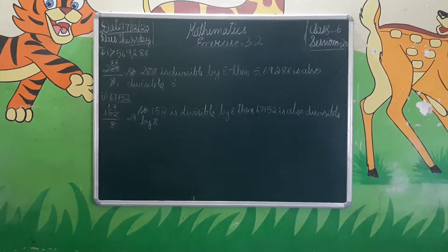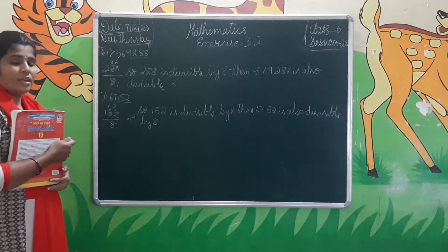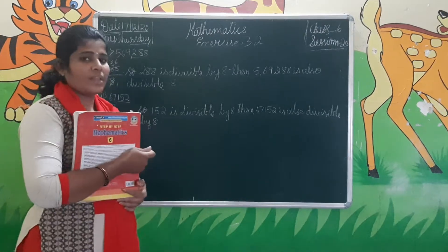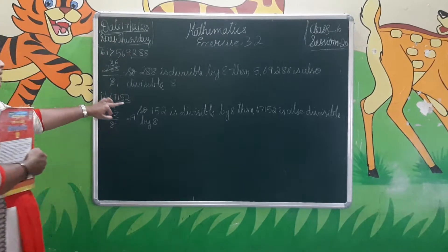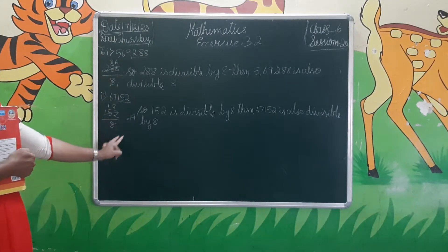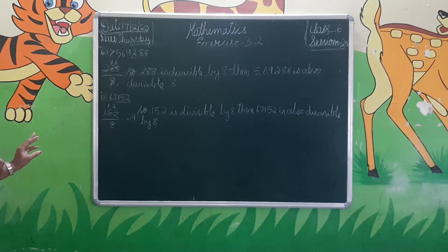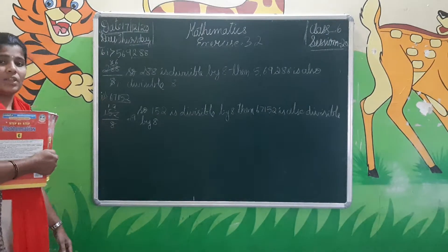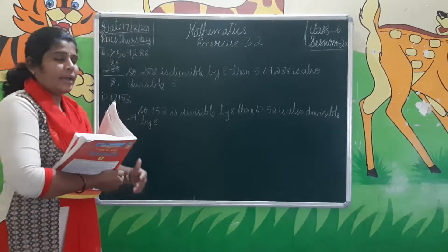Students, if the last digit — the one in the ones place — is an odd number, then the number is not divisible by 8. Only if an even number is in the ones place do we need to check further. If the ones digit is odd — that is 1, 3, 5, 7, or 9 — then the number is not divisible by 8.